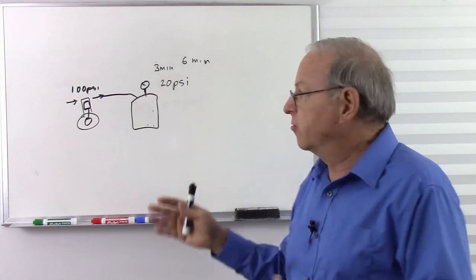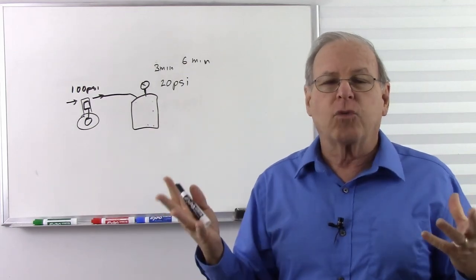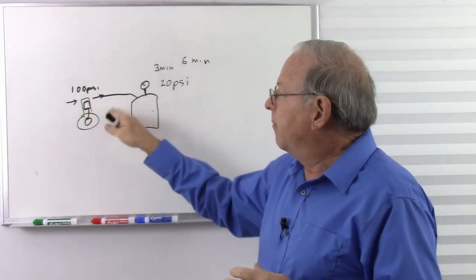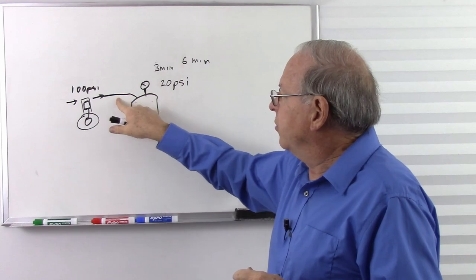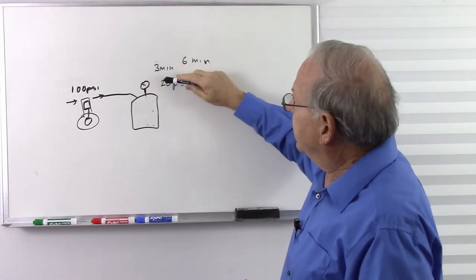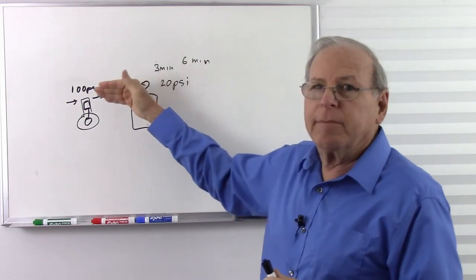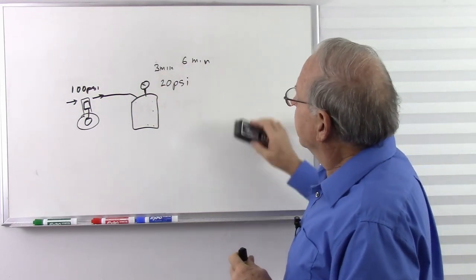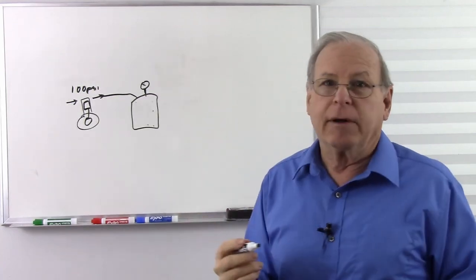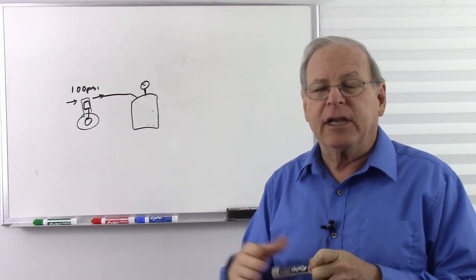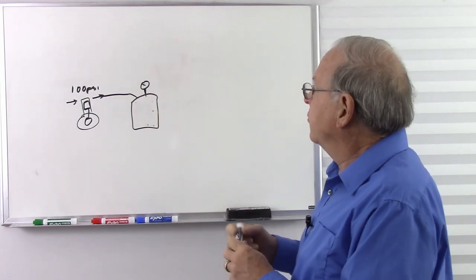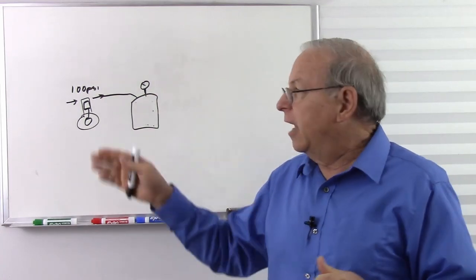If we put a restriction in the pipe, that's going to slow it down even more. The speed the tank fills depends on how much pressure we can produce, how much restriction the hose has, and how big the tank is. If we double the size of the tank, it takes twice as long to reach each milestone. As we fill it up, it takes longer and longer because the tank is pushing back more and more. To finally reach 100 psi might take 20 minutes, where it took only one minute to get to the first 20 pounds.